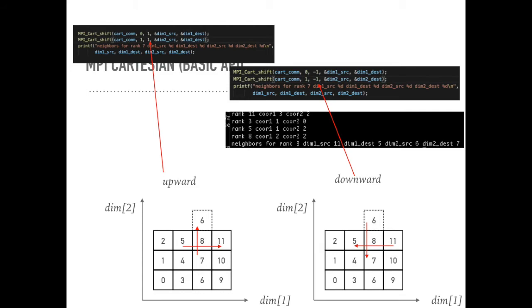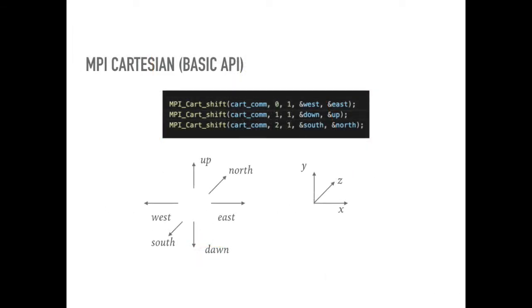There are two typical patterns for this method. The first is called the upward shift, which means the ID increase from the small number to the large number. Another is downward shift, which means the ID decrease from the large number to the small number. When it is downward shift, this parameter, I mean the third parameter is negative value. And we could associate the rank_source and rank_dest with the meaningful variable name, such as the west, east, down, up, and south, north. This is how it is in real use case.